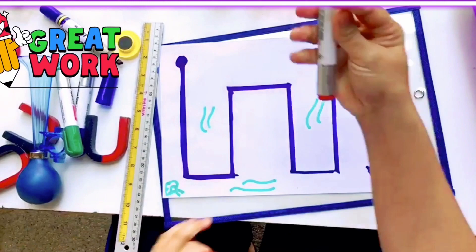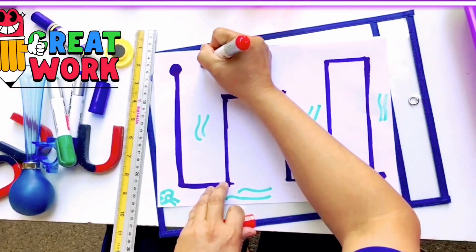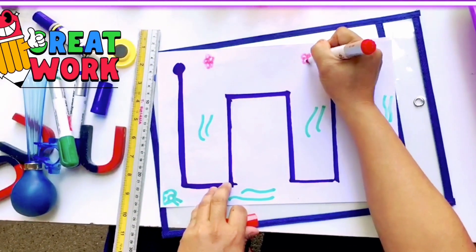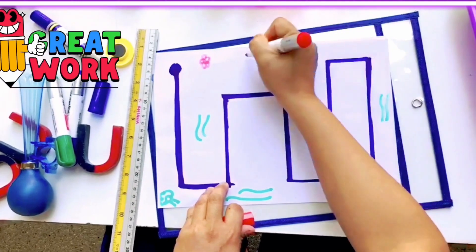You can decorate the race track. Some red. Some flowers. You can draw a flower. I like flowers.